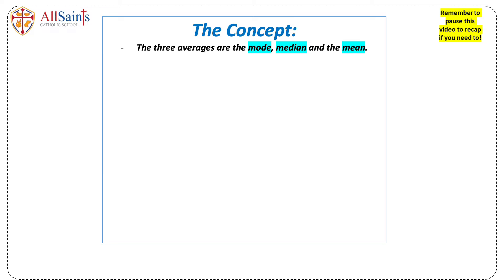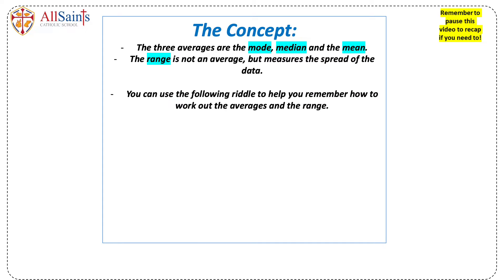The three averages that you need to know about are the mode, median and the mean. Make sure you know that the range is not an average — it just measures how spread out the data is.